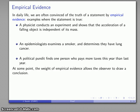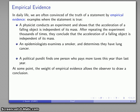Now a physicist or an epidemiologist or political pundit, at some point the weight of empirical evidence they collect may allow the observer to draw some sort of conclusion. So a physicist might repeat this experiment thousands of times and every time they find that the acceleration is independent of the mass they have a confirming instance of the truth of the statement.